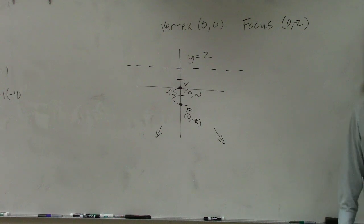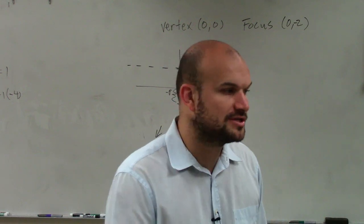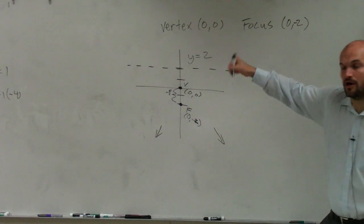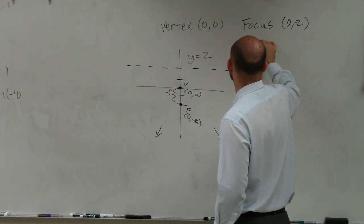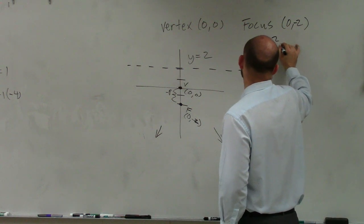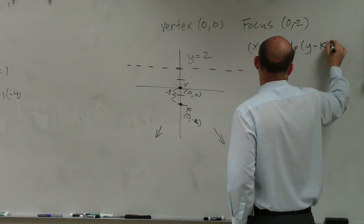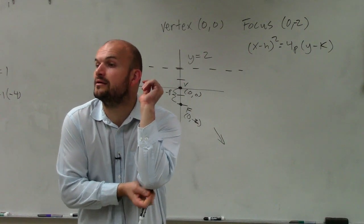So now we need to write the equation of the graph. Write the standard equation of the graph. So now what I want to do is go ahead and write in, since this is a vertical graph, I know it's going to come in the form of x has to be squared. So x minus h squared equals 4p times y minus k. Now, we already talked about, yes?